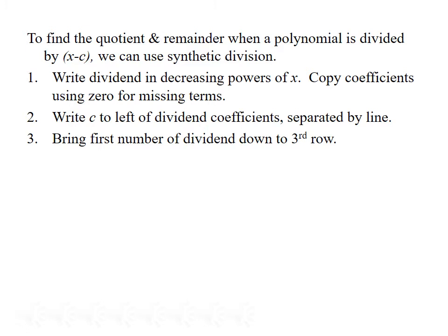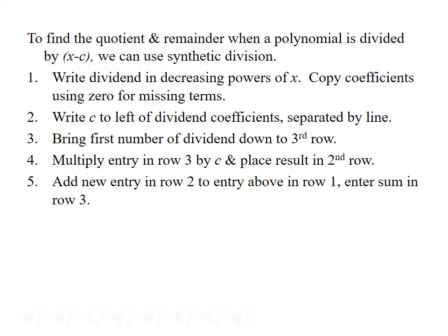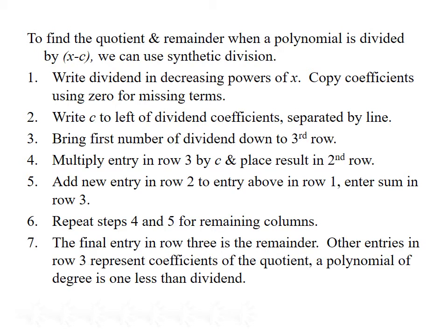For synthetic division, we use three rows of writing. The first row contains the coefficients we've already written. We leave the second row blank for now. Third, we bring the first coefficient of the dividend down to the third row. Next, we multiply that entry in row 3 by the value c and place the result in row 2 in the next column. Then we add the new entry in row 2 to the entry above it and put the sum in row 3. We repeat this process for all remaining columns. The final entry in row 3 is the remainder, and the other entries in row 3 are the coefficients of the quotient, which will be a polynomial of degree one less than what we started with.